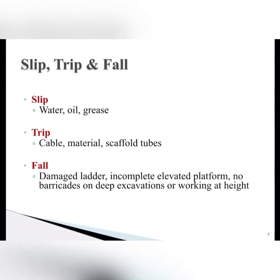Now we will discuss slip, trip, and fall. When you start an activity on site, there are three main hazards: slip, trip, and fall. If there is water, oil, or grease on the ground, a person can slip. If there is no proper housekeeping or if there are cables, housing materials, or scaffold tubes in your way, a person can trip. For fall hazards — a damaged ladder, an incomplete elevated platform, no barricades on deep excavations, or working at height — someone can fall. We have to eliminate these things from the construction site.